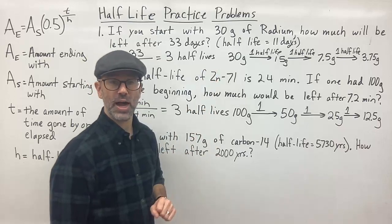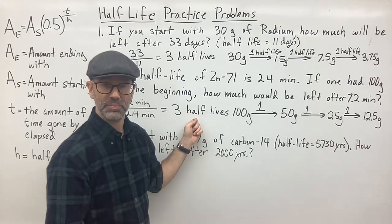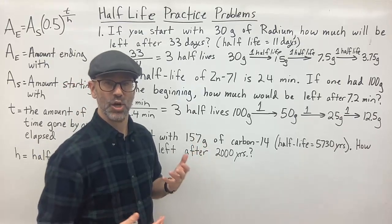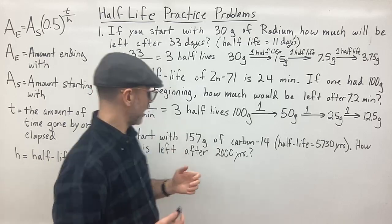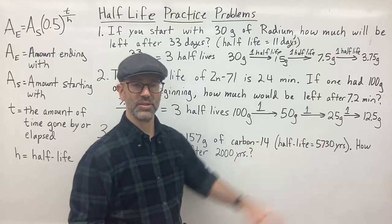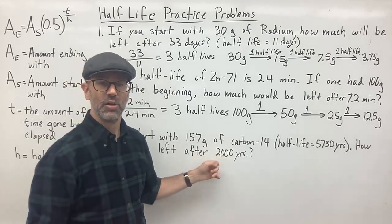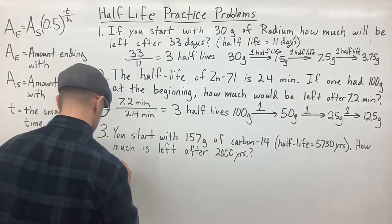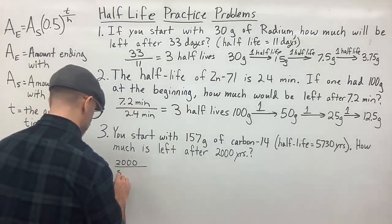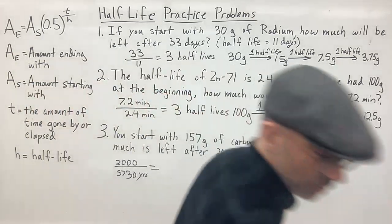If you can figure out the number of half-lives, you just divide your sample in half that many times. But what if the number of half-lives doesn't come out to a nice whole number? Let's look at problem three. I'm starting with 157 grams of carbon-14, the half-life is 5,730 years, and they want to know how much is left after 2,000 years. That 2,000 years is not even one full half-life — 2,000 divided by 5,730 is a fraction less than 1.